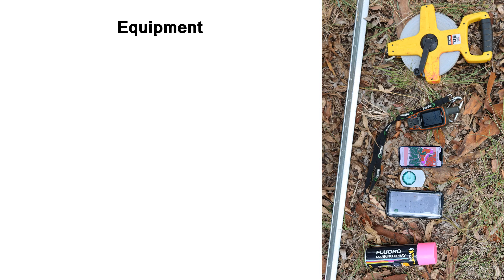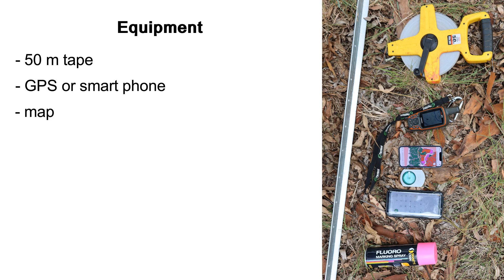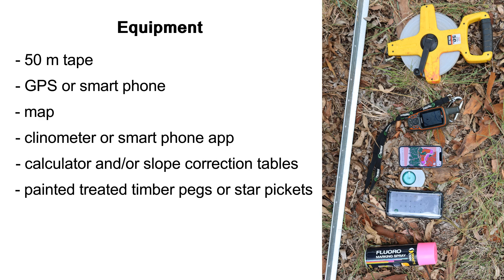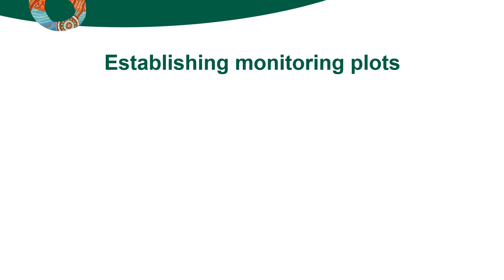The equipment you will need is a 50-metre tape, a GPS device or a smartphone, a map of the forest area, a clinometer or an app on a smartphone, a calculator and/or slope correction tables, painted treated timber pegs or star pickets, and spray paint. To establish monitoring plots, there are several steps to follow.